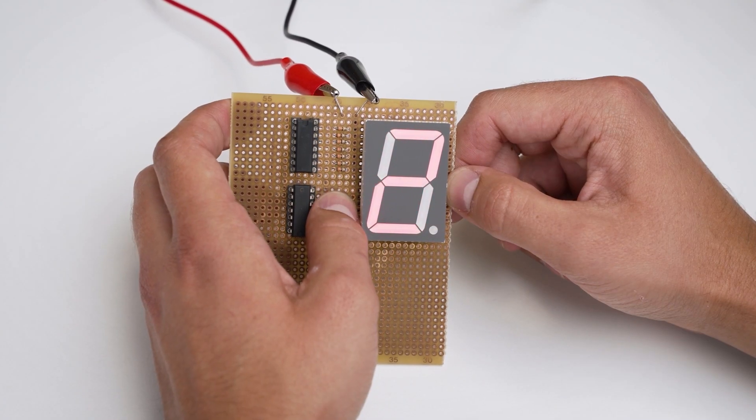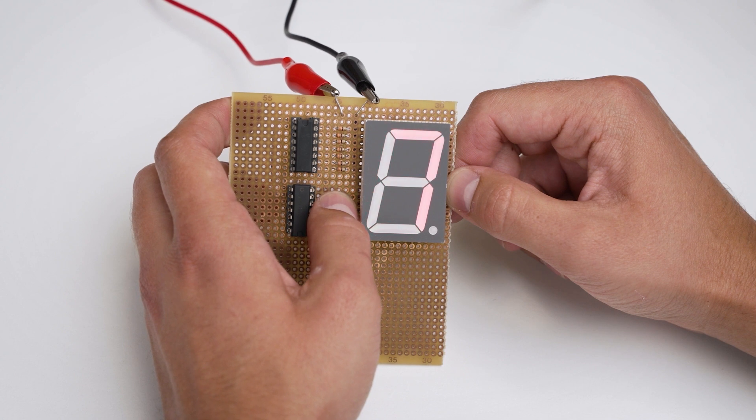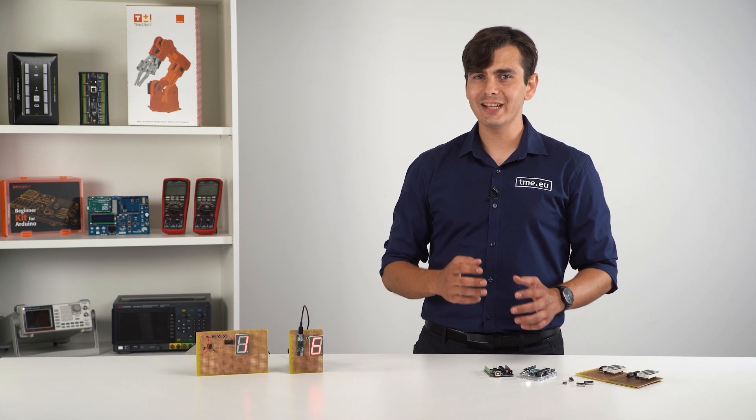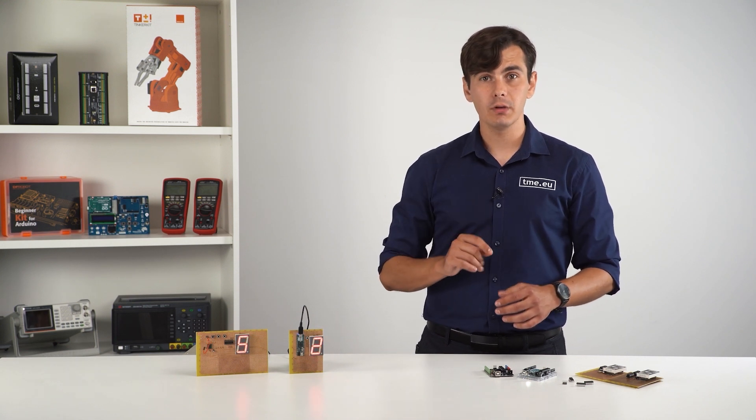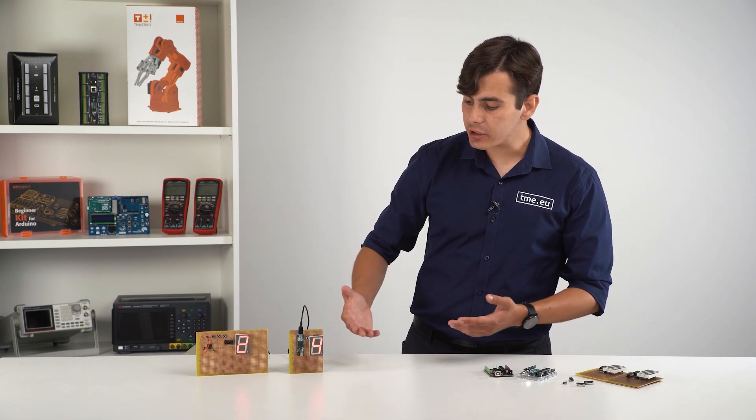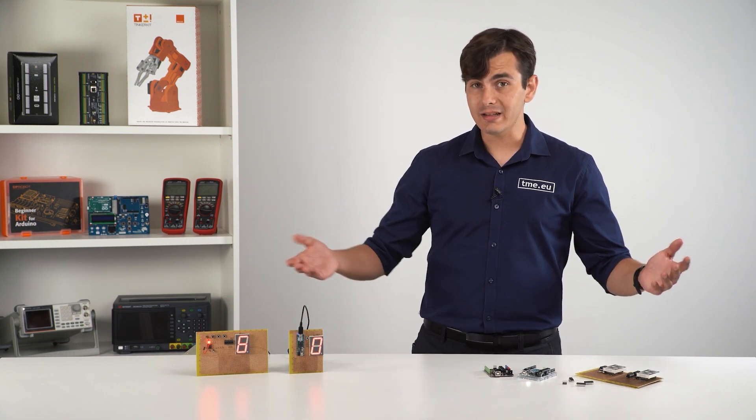We have successfully created a counter in two different ways. Let's step it up a bit. Now, we want to create a counter that counts up and down. You might think that we need to make some hardware tweaks and changes in the MCU one, but that's not the case. The only thing that we need to change is the software.